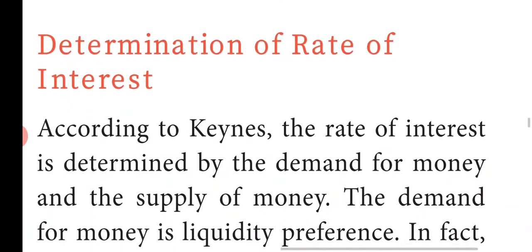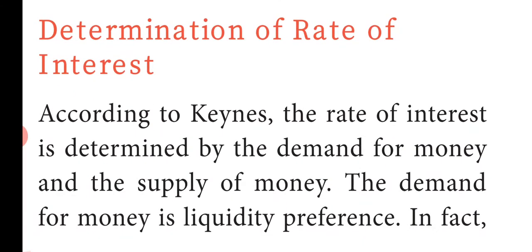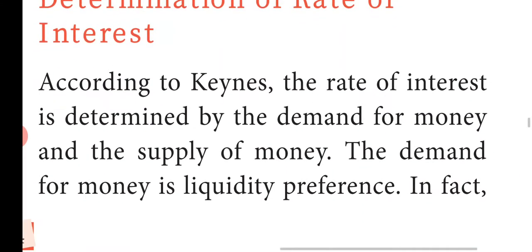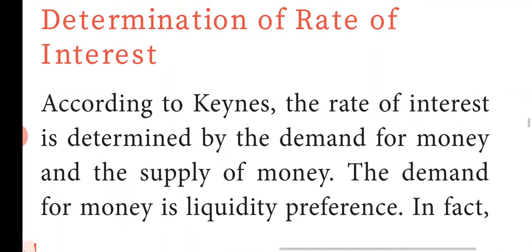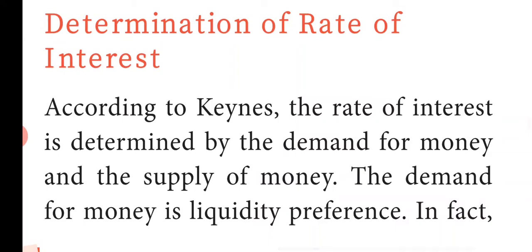Determination of Rate of Interest: According to Keynes, the rate of interest is determined by the demand for money and the supply of money. The speculative motive is equal to 450 minus 100 times the rate of interest.